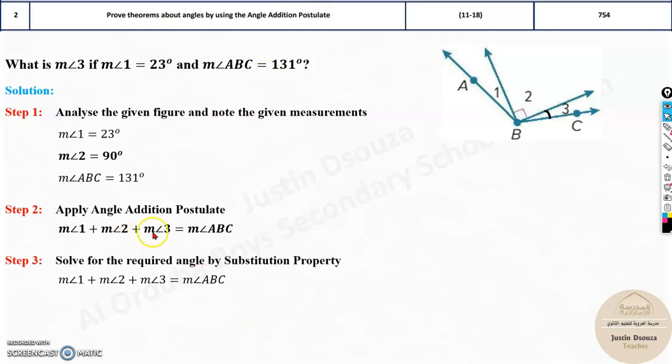What you do is, just simplify and solve. This is by substitution property, where we substitute all that we know and find the unknown. So 131 minus 23 minus 90 will give you 18. That is it. That is the answer.